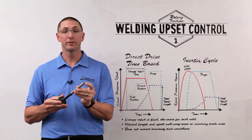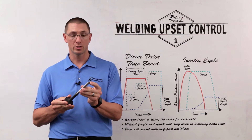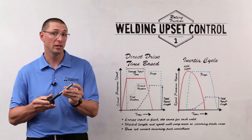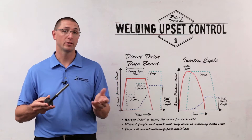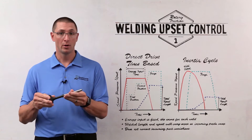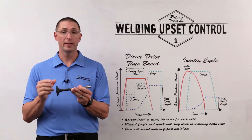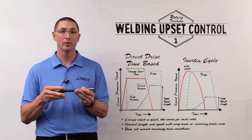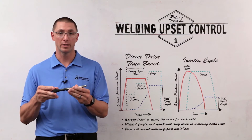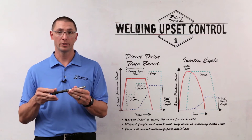I could have different surface conditions, surface cleanliness, material differences such as heat treatment or hardness, or the interface squareness — all of these can affect how the energy is dissipated during welding.